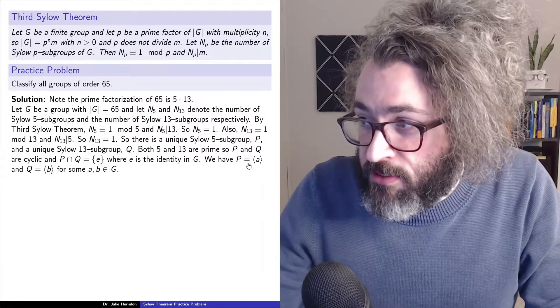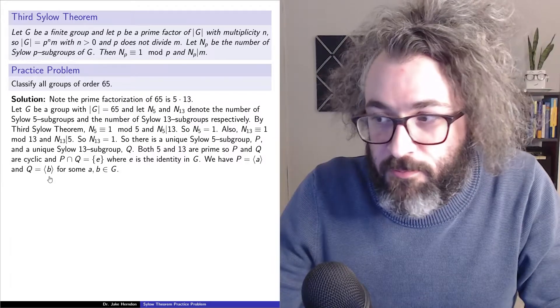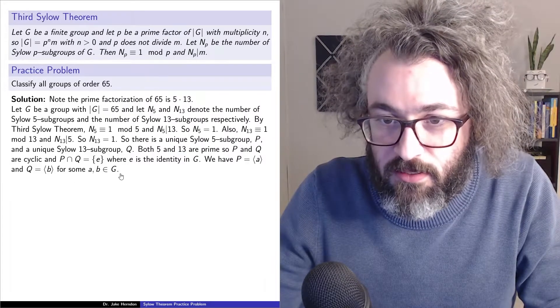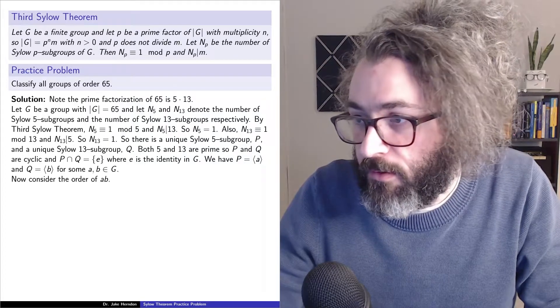So P is generated by some a, and Q is generated by some b for some elements a and b in the group G. That's what it means for them to be cyclic.